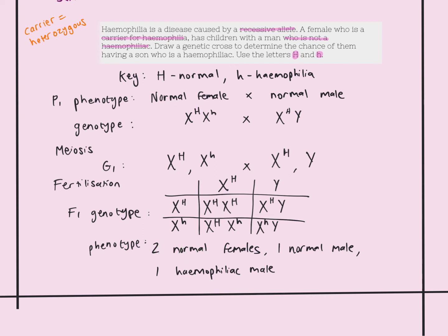The first son is normal because he has capital H. The second son, however, is a hemophiliac because he has no second allele to mask the recessive one — males only have one X chromosome. Referring back to the question, which asked for the chance of having a hemophiliac son: therefore, there is a 25% chance, or a one in four chance, of having a son who is a hemophiliac.